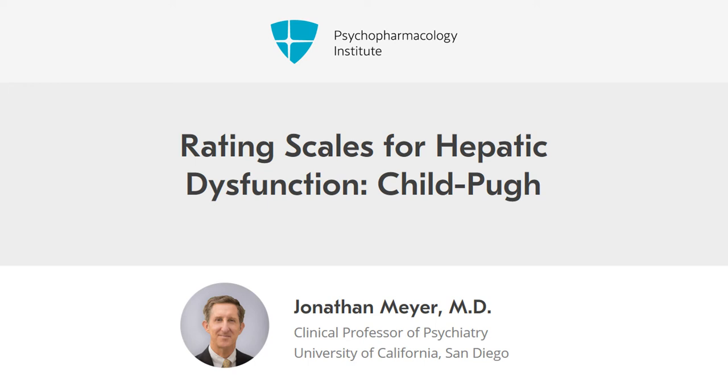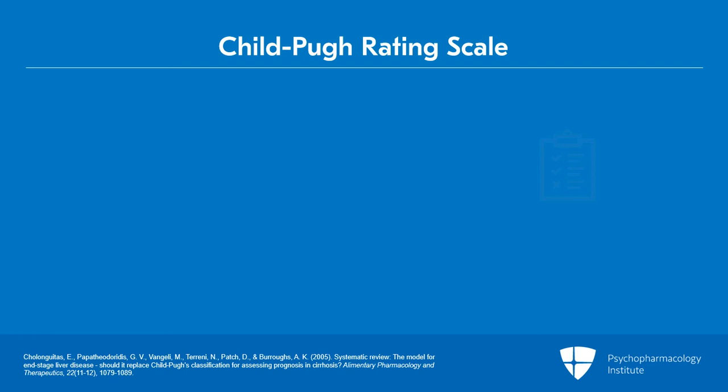So now you're wondering, what is the scale the FDA is recommending in its Child-Pugh? Where did this come from? Well, this scale, which is now in every modern package insert, was originally developed in 1964 to predict mortality during surgery in patients with advanced liver disease, and was then modified in 1972.